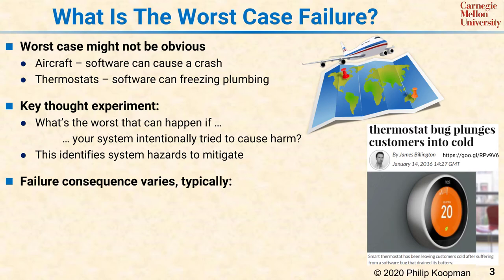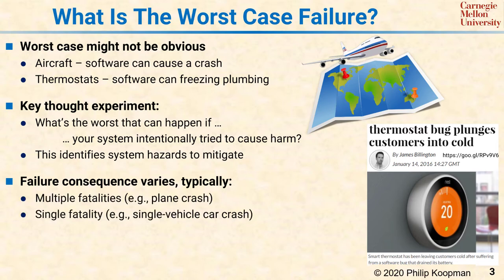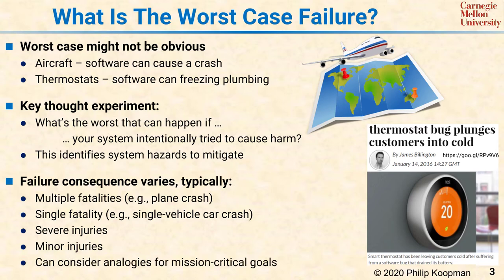The consequences for failure can vary dramatically depending on the situation. It is often helpful to think of them in terms of very wide bins, such as whether they result in multiple fatalities, a single fatality, severe injuries, or minor injuries. Typically, anything involving a fatality is treated with significantly more engineering rigor than something that results just in injuries. For mission critical systems, one can consider a parallel set of bins — but instead of injuries or fatalities, those bins range from entire corporation failure down to a very minor financial loss.